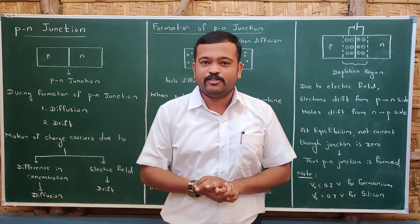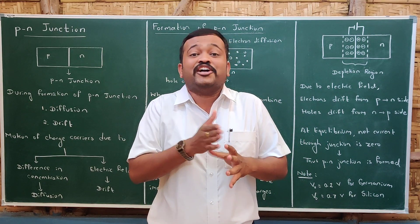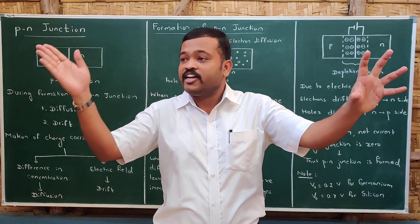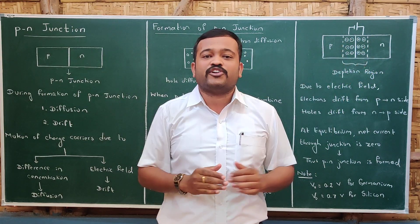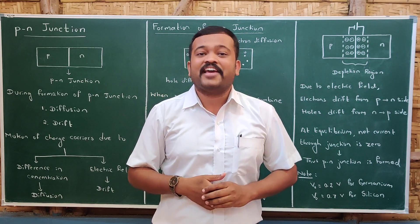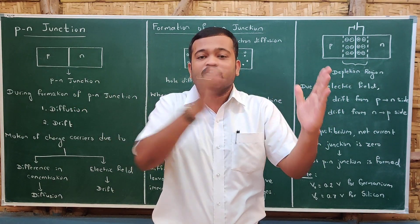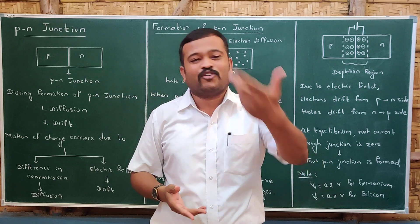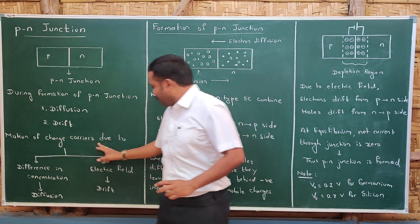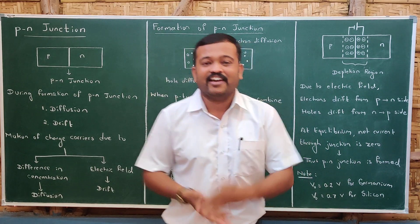During the formation of a PN junction, there are two important processes which take place: one is diffusion and the other is drift. Diffusion is the motion of charges due to a difference in concentration. If there are more electrons here and fewer electrons there, electrons tend to move from high concentration to low concentration — this kind of motion is called diffusion. The motion of electrons due to an electric field is called drift.